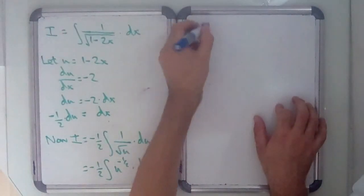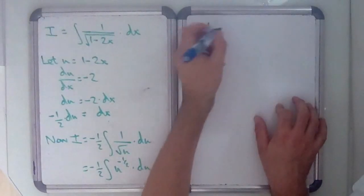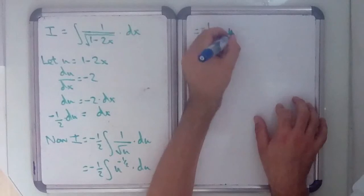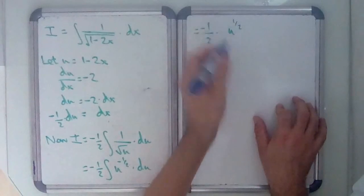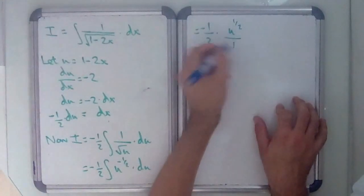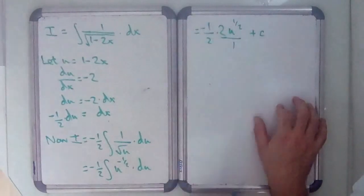So equals minus 1 half, just leave that as a constant, times u to the minus 1 half plus 1 is 1 half, so over 1 and times 2 plus c, the constant of integration.